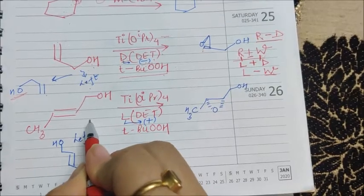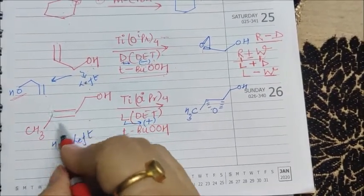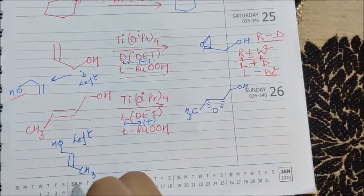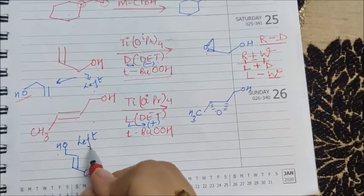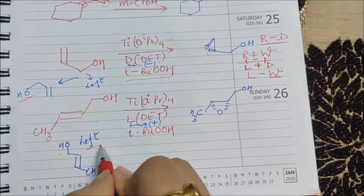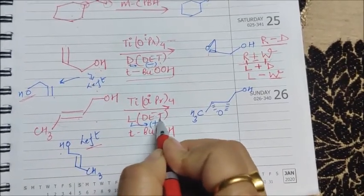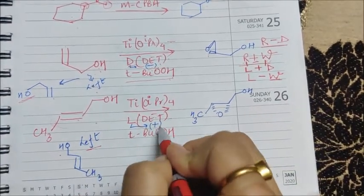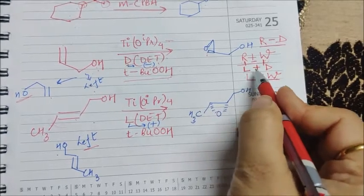Now with this molecule, OH is not on the vertical line, so I will again rotate the molecule 90 degrees and make the OH on the vertical line. Now as you can see, the OH is on the left side, and L-DET means plus DET.